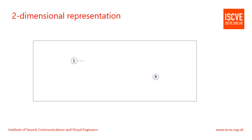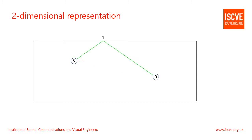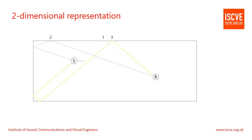So, what is the direct-to-reverberant ratio? Here we have a two-dimensional representation of a room with the sound source labelled S and a receiver R. The receiver might be a listener or maybe even a measurement microphone. The sound arriving at the receiver consists of two parts: first, we have the direct sound which travels directly from the source to the receiver, and secondly the reflected sound. The reflected sound is anything that has one or more reflections. But not all reflected sounds are the same. If the sound reflects off a single surface, it is known as a first-order reflection. If the sound reflects off two surfaces, that's a second-order reflection, and so on. The sound which travels directly from the source to the receiver is said to have a zero-order reflection.